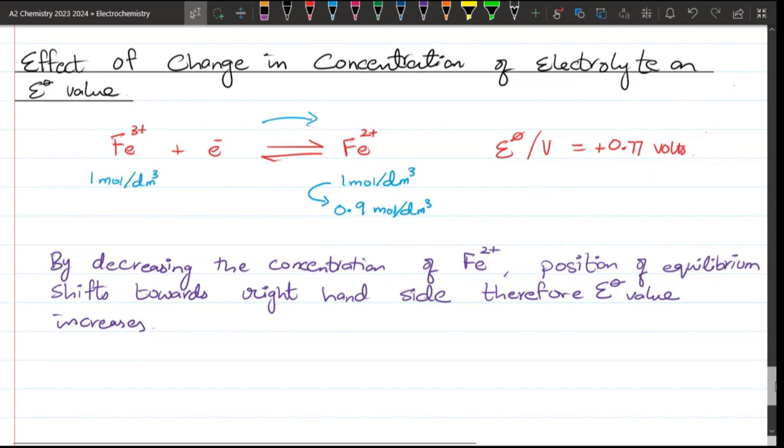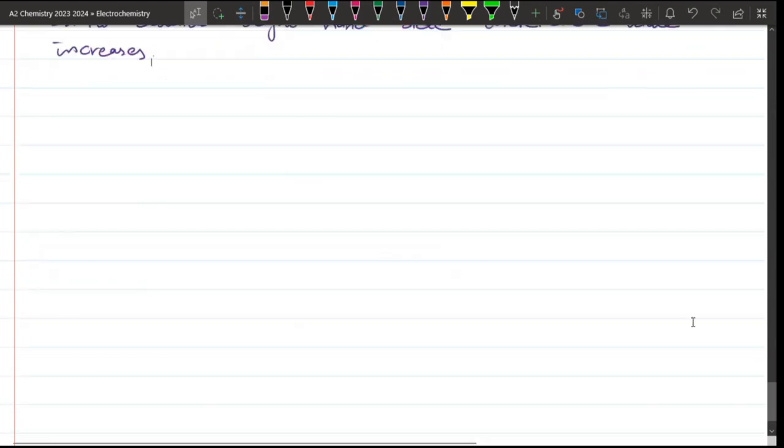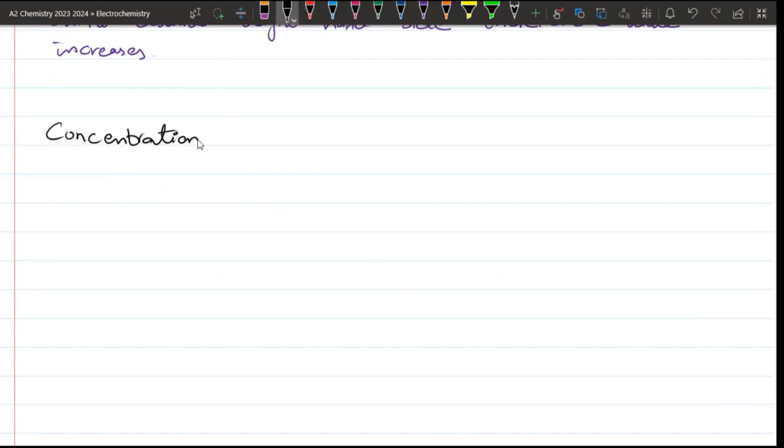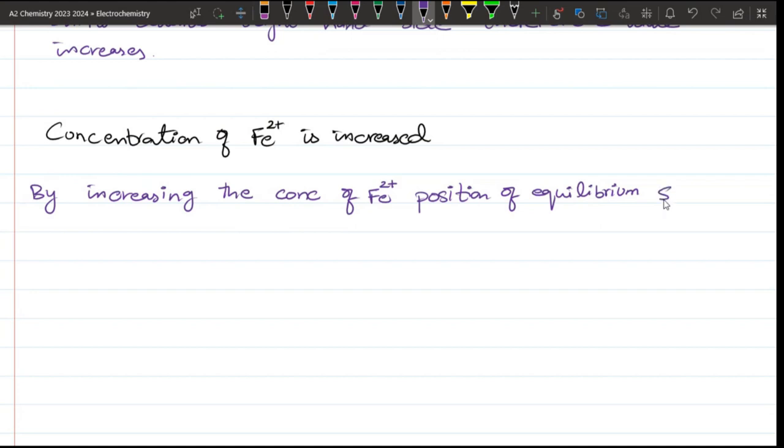What will happen? By increasing the concentration of Fe²⁺, the position of equilibrium shifts towards backward, left hand side.